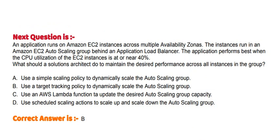Next question: An application runs on Amazon EC2 instances across multiple Availability Zones. The instances run in an Amazon EC2 Auto Scaling group behind an Application Load Balancer. The application performs best when the CPU utilization of the EC2 instances is at or near 40 percent. What should a solutions architect do to maintain the desired performance across all instances in the group?